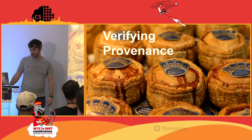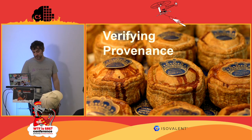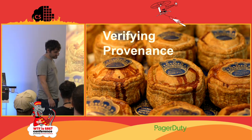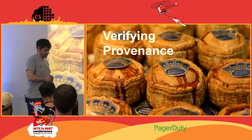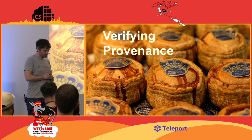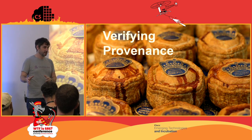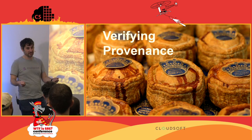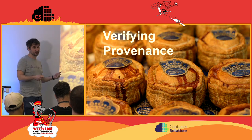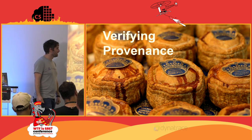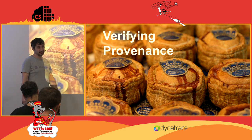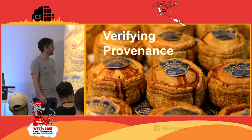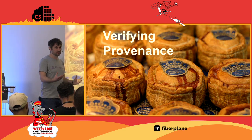Verifying provenance is about making sure you know what you're running, that you know where your container images came from, that they came from who you think they came from, and that nobody could have tampered with them in the meantime. The analogy here is Melton Mowbray pork pies — you want to be sure that your Melton Mowbray pork pie came from Melton Mowbray and nobody's been able to tamper with it before you eat it.